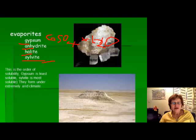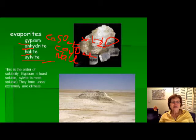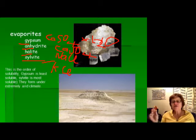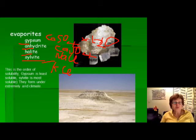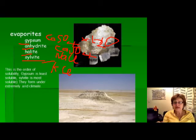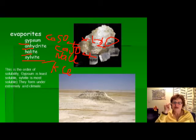Anhydrite is just calcium sulfate with no water. Halite is sodium chloride — what we call rock salt in sedimentary rocks. Sylvite is potassium chloride — the most soluble, and it only precipitates out of the ocean under extremely dry conditions; even the smallest morning moisture will dissolve it back. So most salt deposits only have sodium chloride and never potassium chloride. The formation order is: first dolomite, then gypsum, then anhydrite, then halite, then sylvite. You need to know this order.